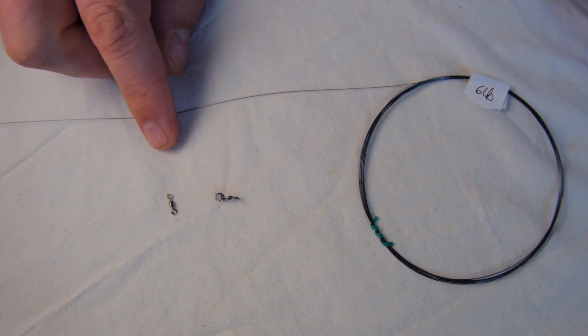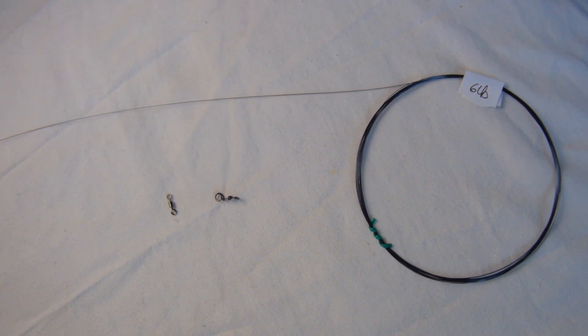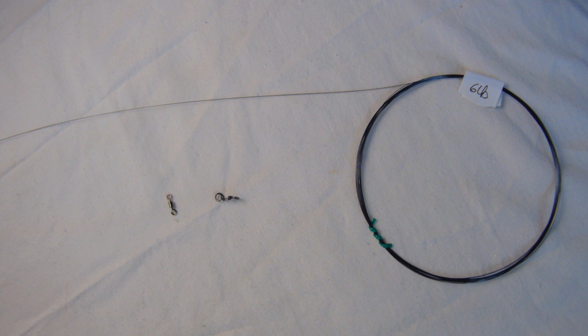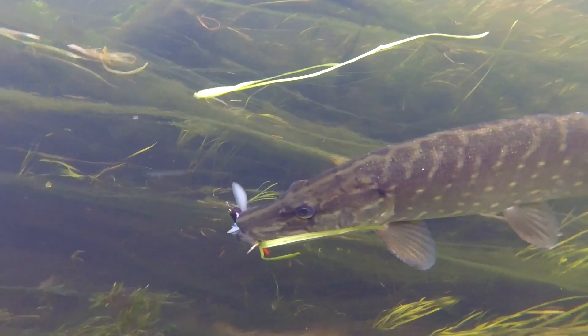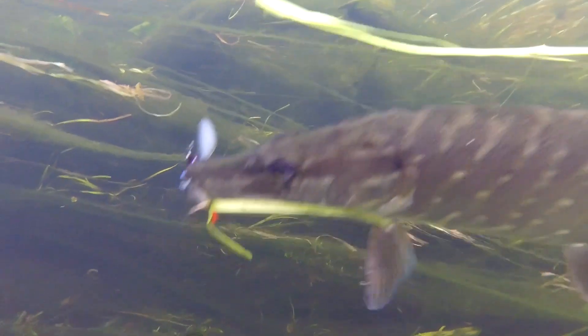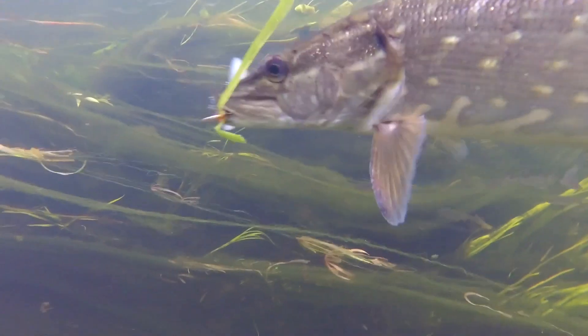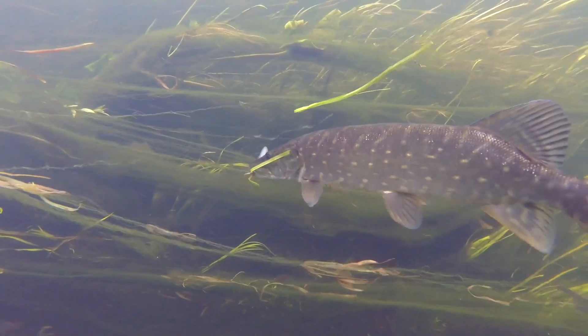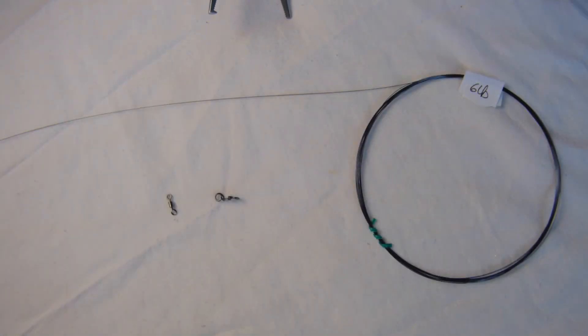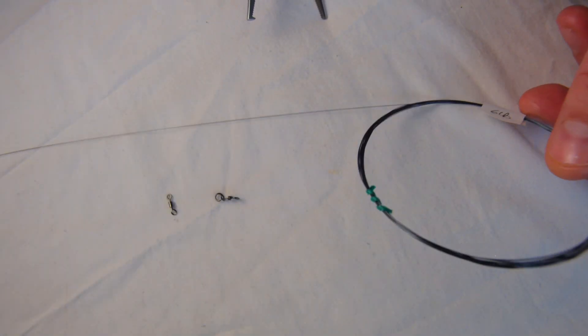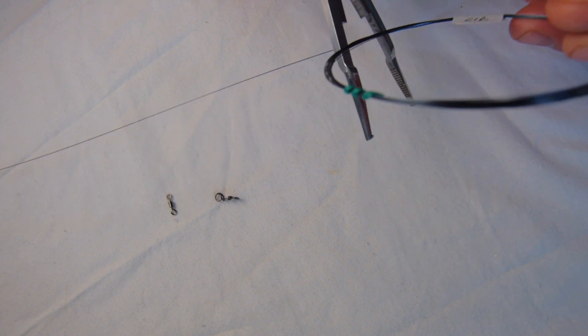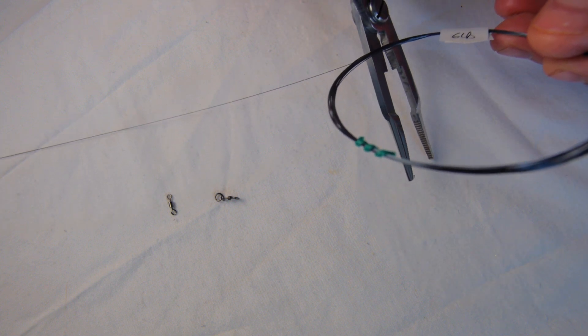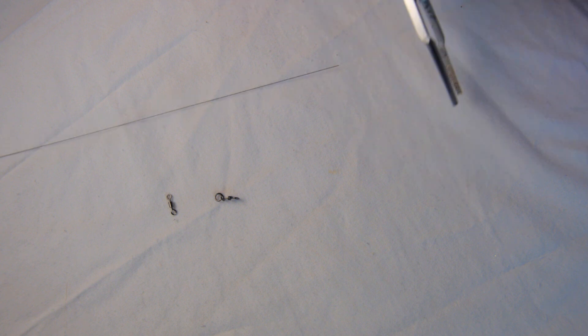So the benefit of using these is in the summertime when you're perch fishing or chub fishing with lures, quite often a pike will come along and hit the lure. If you're using fluorocarbon, sometimes you get away with it, sometimes the fluorocarbon is tough enough to prevent a bite-off, but this is a foolproof way to protect yourself from those unwanted bite-offs from toothy critters.